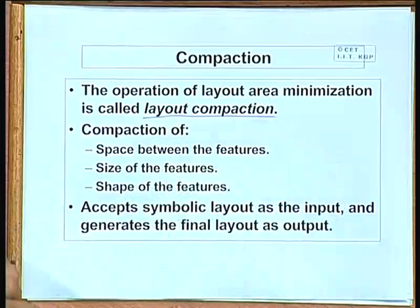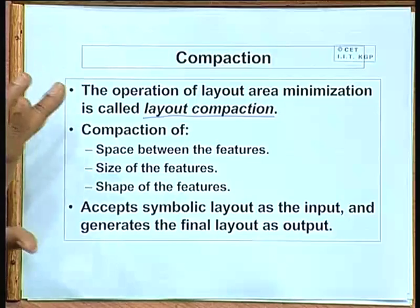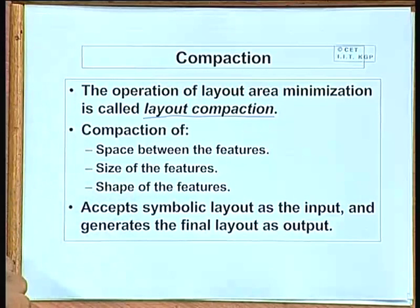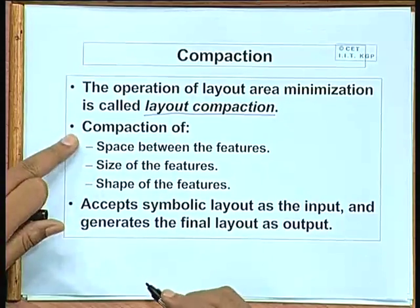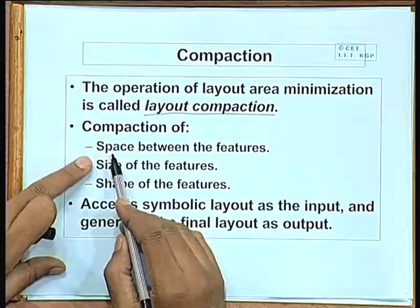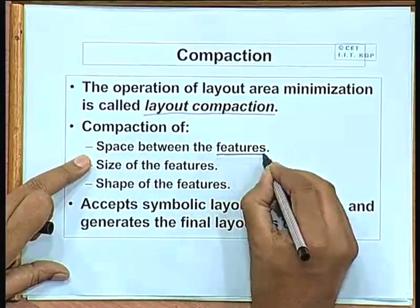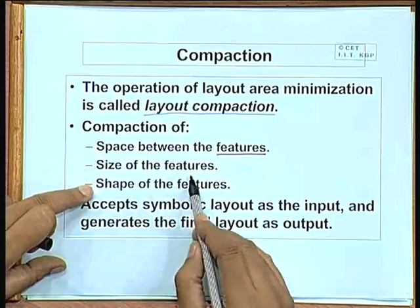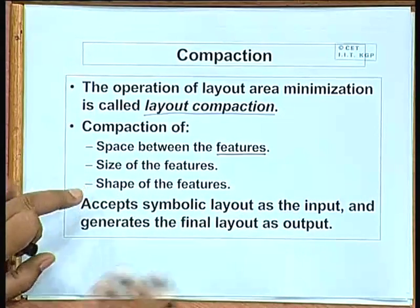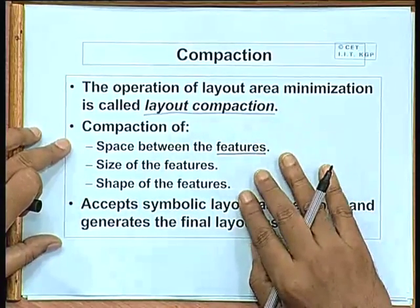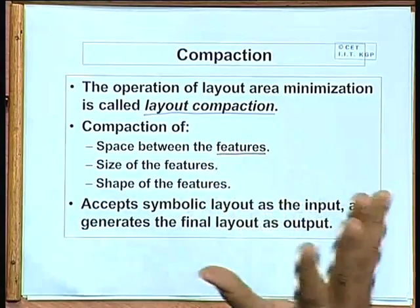We have completed the layout — cells in place, all interconnections done — and then we try to make some compaction. When we say compaction, we are talking about compacting the space between features, the size of features, and in some cases also the shape of features. At the layout level, we do not have gates at a high level — we have only the layers and their interconnections: diffusion, polysilicon, and metal.